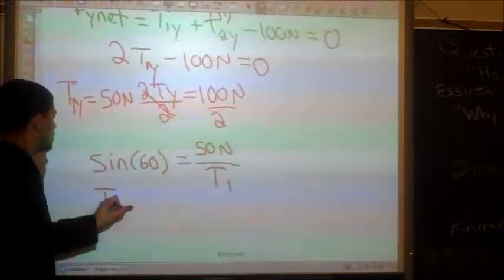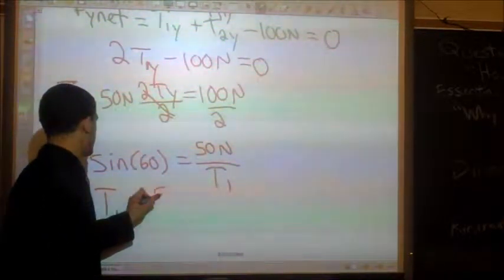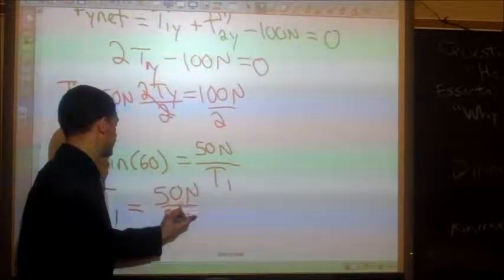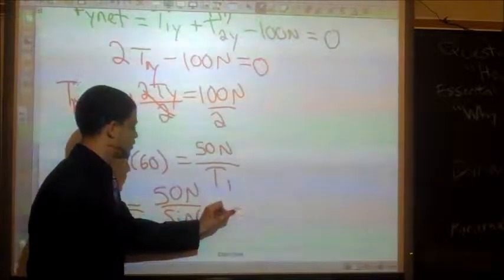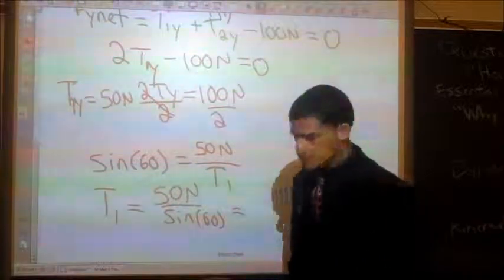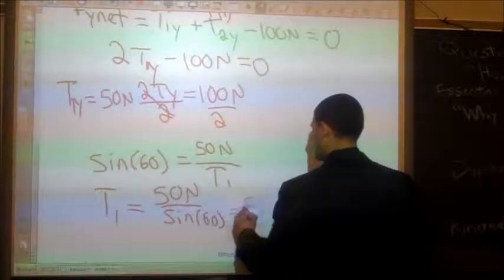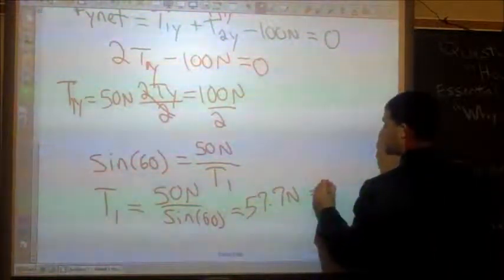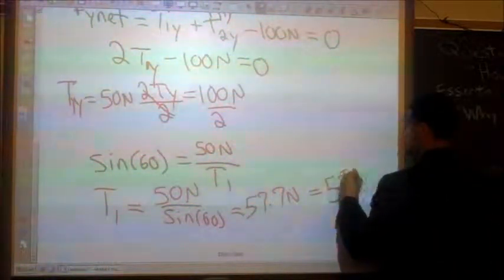And through some mathematical manipulation, I just get t1 is 50 newtons over sine of 60, which equals 57.7 newtons. Or in this case, of sig figs, 58 newtons.